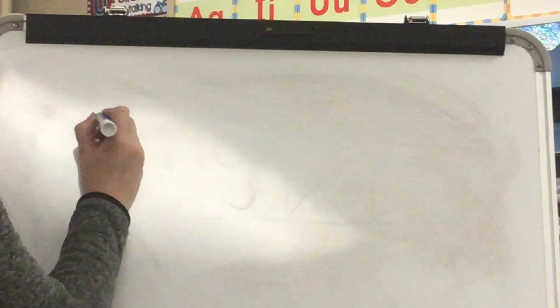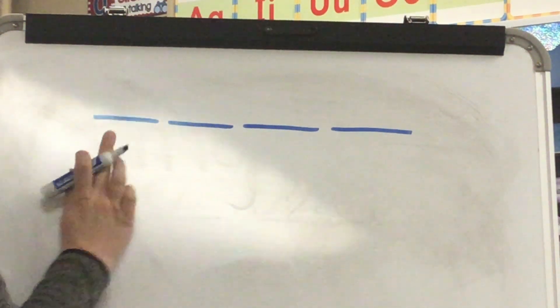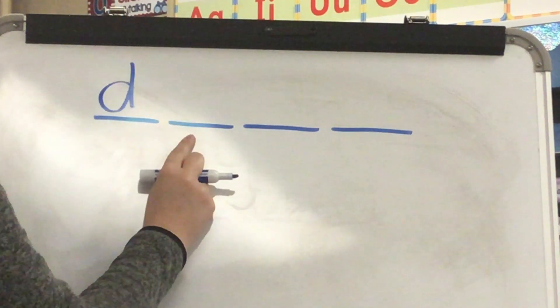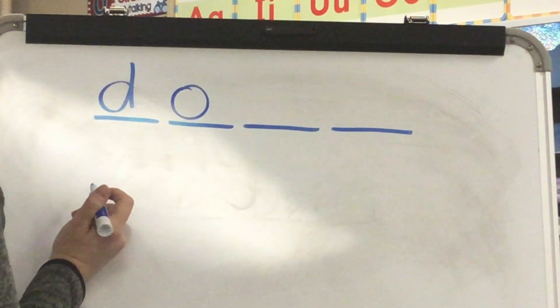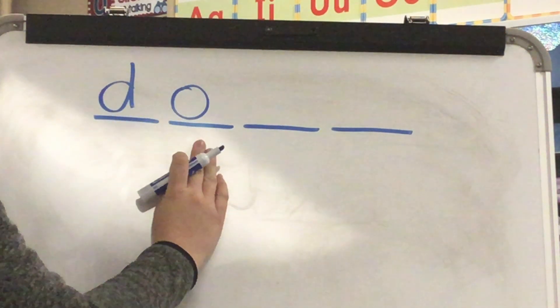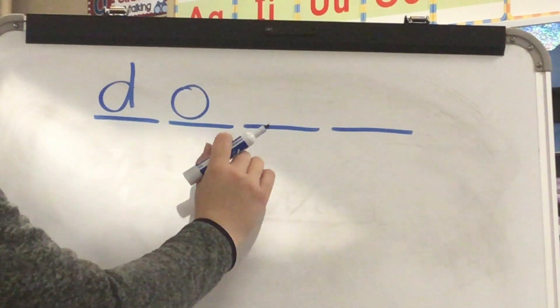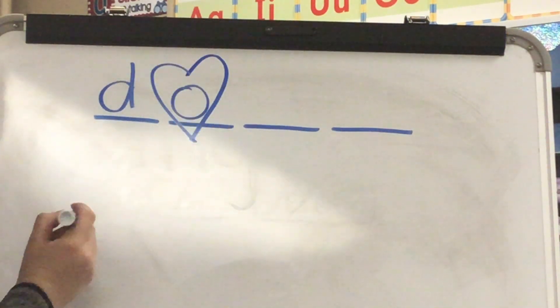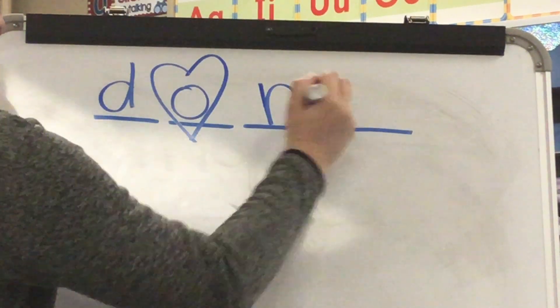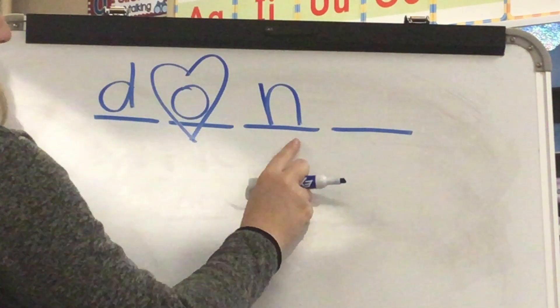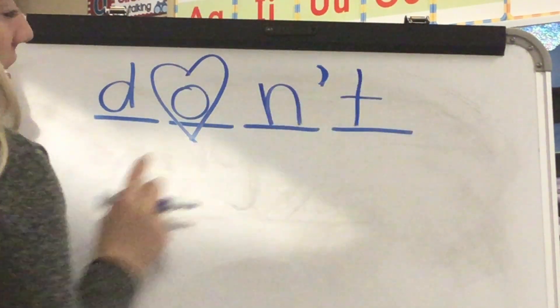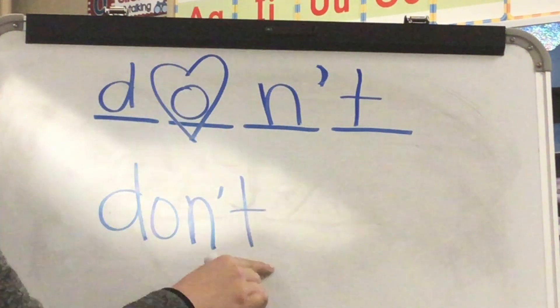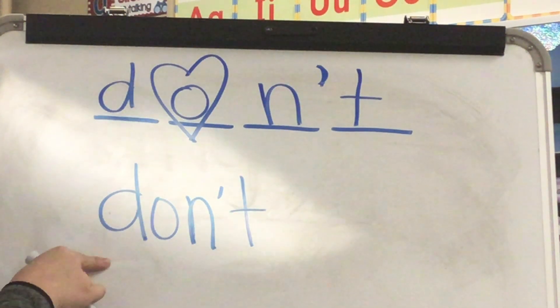We have two new heart words to talk about today. Our first new heart word is a contraction. Our word is don't. What word? Don't. Stretch: D-O-N-T. The O in don't is spelled O — it's not open syllable. That is the tricky part of don't. D-O-N-T. This is a contraction; we have to have our apostrophe before our T. This is the word don't. What word? Don't. Spell don't: D-O-N-T. Word? Don't. Yes, don't.